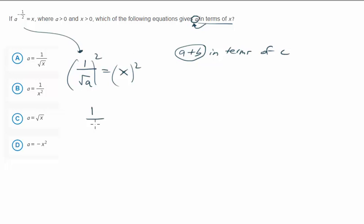This becomes 1 over a, and this becomes x squared. We're almost done. Remember, we have to get a, and this is the inverse, so we're going to flip both sides. So a over 1, which is just a, is the same as 1 over x squared. The answer is B.